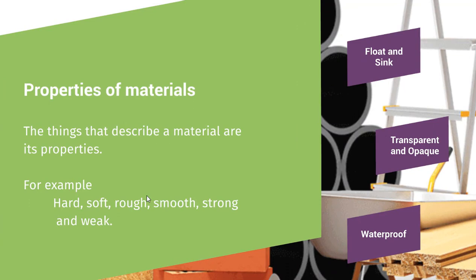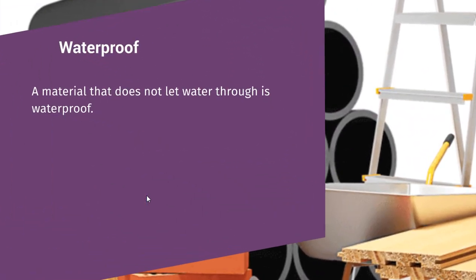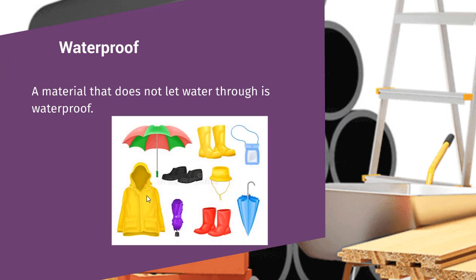Now we will discuss waterproof. What is waterproof? A material that does not let water through is waterproof. For example, here are a few objects that we use during the rain: umbrella, raincoat and shoe.